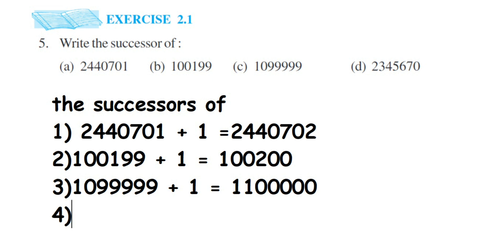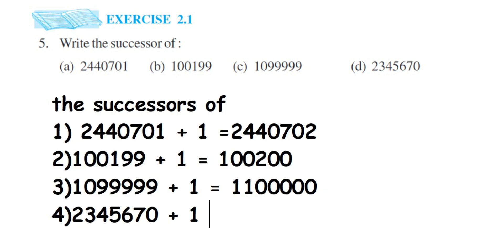The last one: we have 23456770. To find the successor, add one to it. We have a zero at the end, so zero plus one becomes one. The answer is 23456771.